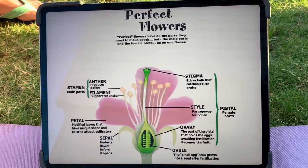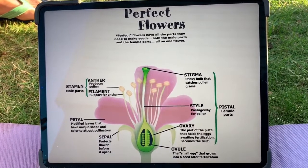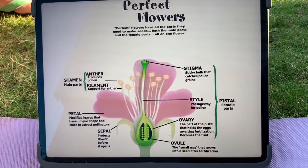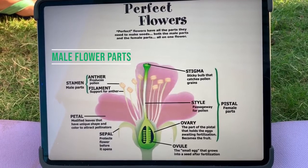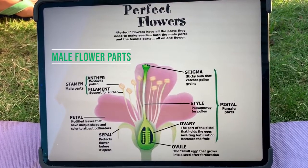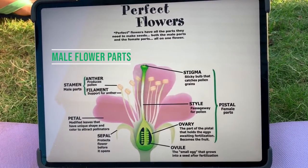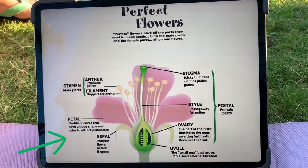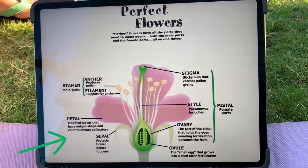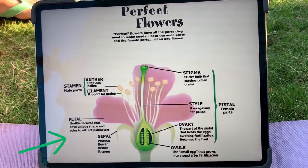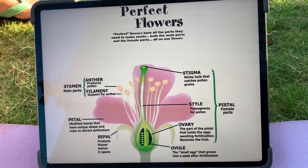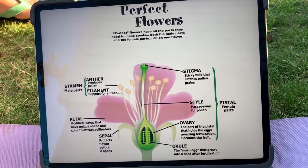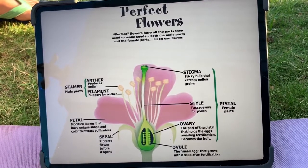The ovary is where it will be fertilized and become the fruit. The male part is called the stamen. It has the anther which is what produces the pollen, and the filament. You can also see the petal and the sepal, which are both needed to protect the inner parts of the flower, in addition to attracting pollinators like bees.